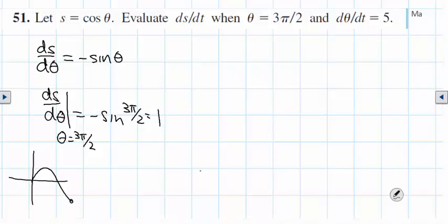But again, they're not asking us what ds/dθ is. They're asking us what is ds/dt. Ah, but we have this thing, again, called the chain rule.